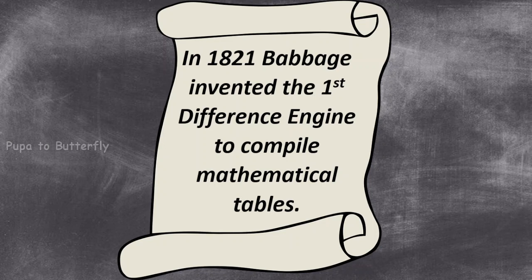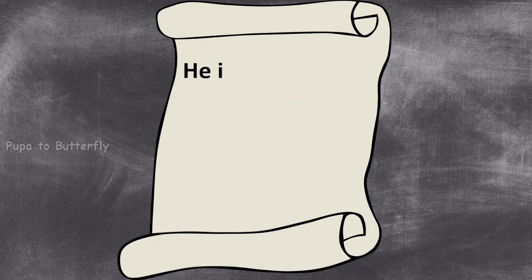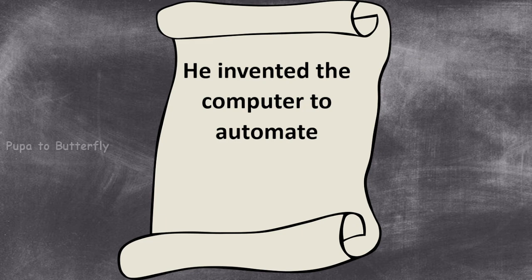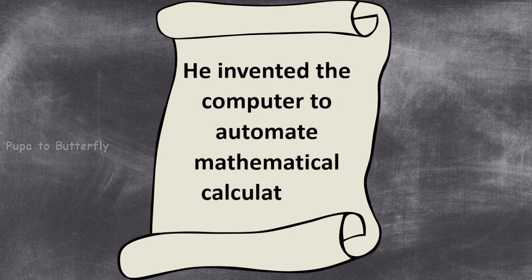In 1821, Babbage invented the first Difference Engine to compile mathematical tables. He invented the computer to automate mathematical calculations.